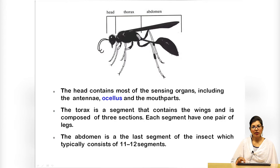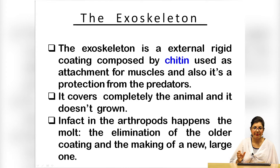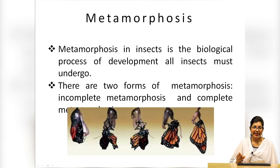The exoskeleton is a characteristic feature of insects — it is an external rigid coating composed of chitin, used as attachment for muscles and also as protection from predators. It covers the animal completely and does not grow. In arthropods, molting occurs — also known as metamorphosis — which is the elimination of the older coating and making of a new and larger one.